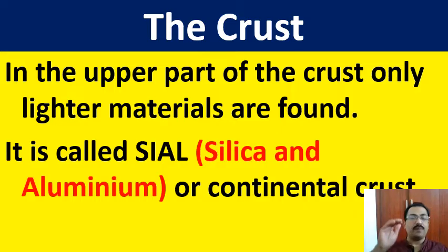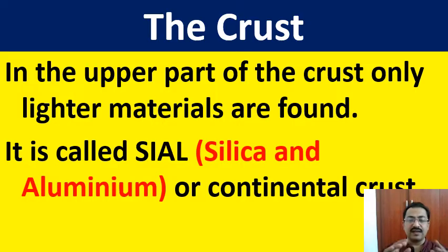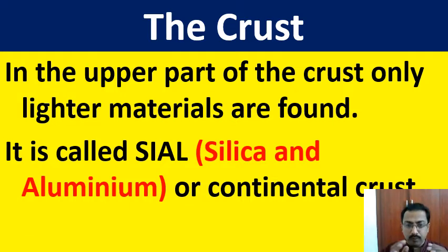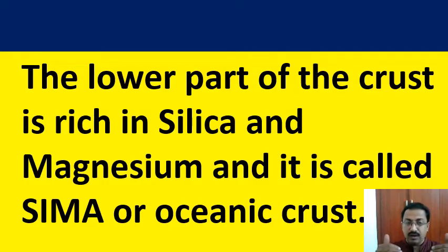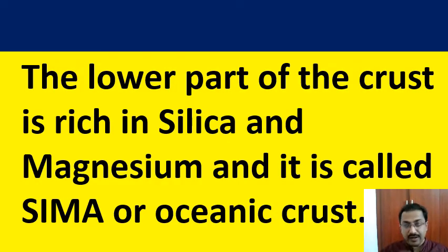In the uppermost part of the crust, only lighter materials are found — namely Sial, that means silica and aluminium. Silica and aluminium are put together and an abbreviation is made: Sial. Si stands for silica, Al stands for aluminium. Next, below Sial you have Sima — S-I-M-A. The lower part of the crust is rich in silica and magnesium, that is why it is called Sima. Si for silica, Ma for magnesium.